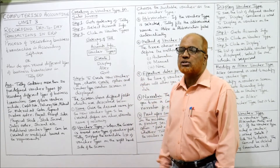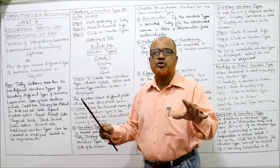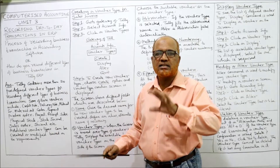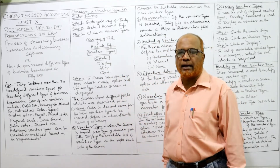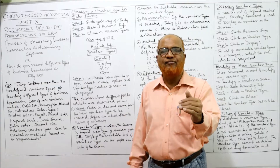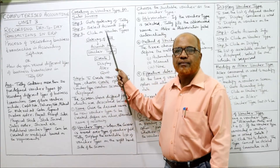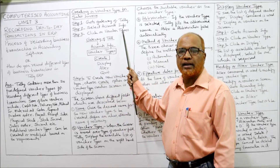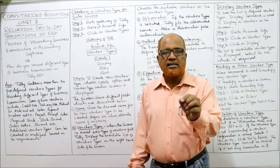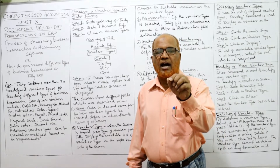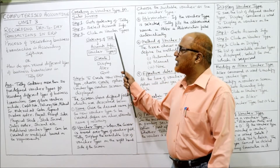When you open the Gateway of Tally it will ask which option you want — select Account Info. Step 3 — click on Voucher Type. Under Account Info you will have a number of options; select Voucher Type. To summarize: Step 1 go to Gateway of Tally, Step 2 select Accounts Info, Step 3 select Voucher Type.